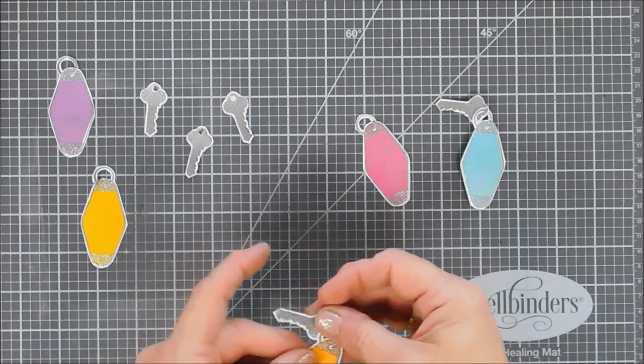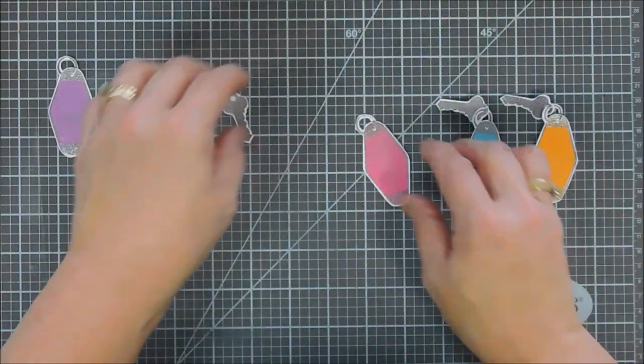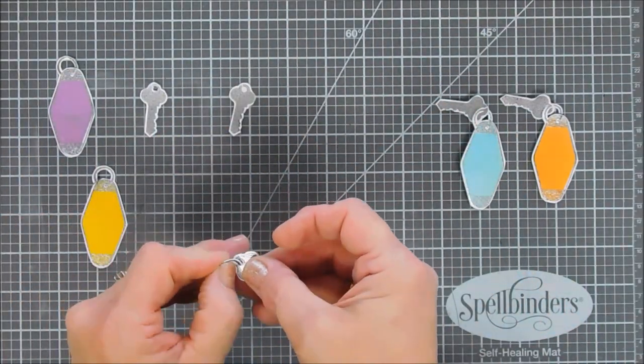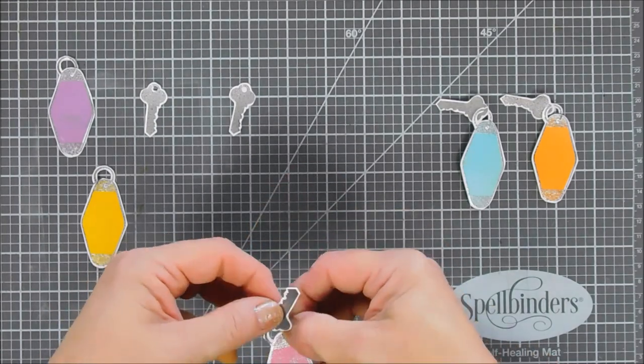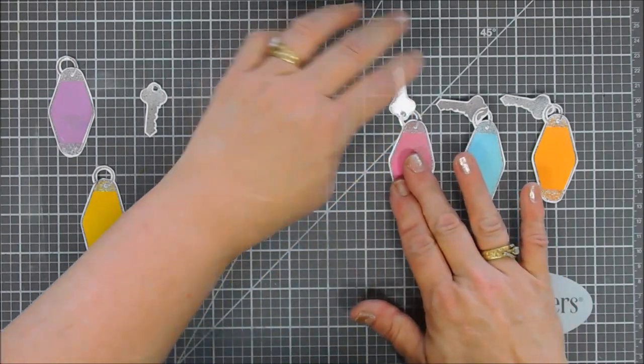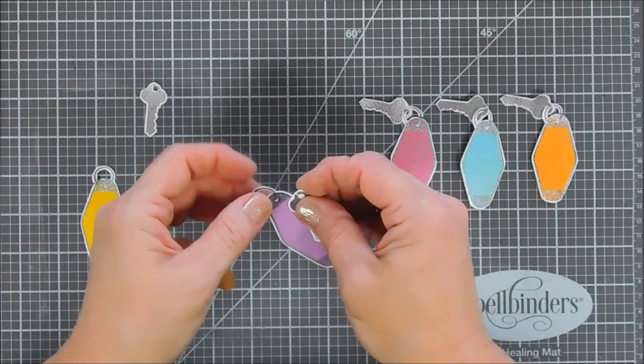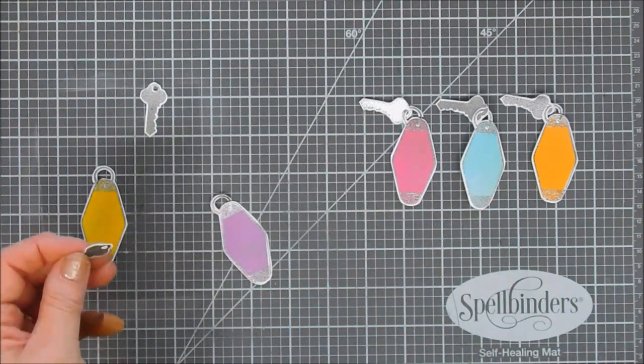I did punch a hole in the center of my keys here so I could slide it through the ring of my keychain. It just made it easier. There's no way or you could use that paper piercer if you wanted to but I just used my punch here to punch a hole.